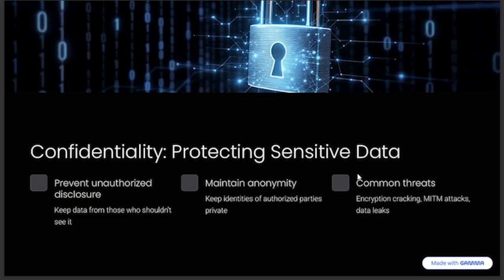Let's look at the first one, which is confidentiality. Confidentiality is all about preventing the disclosure of data to unauthorized parties. It is also about keeping the identity of authorized parties involved in sharing and holding data private and anonymous — maintaining their anonymity.